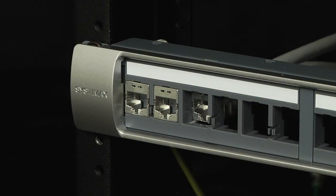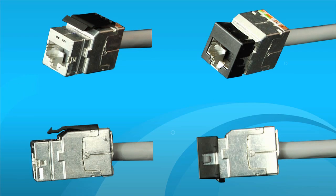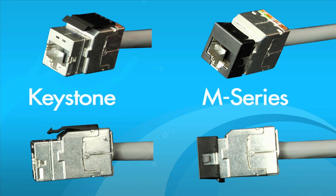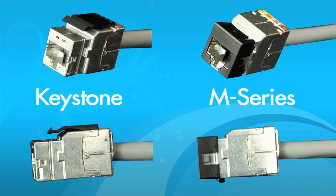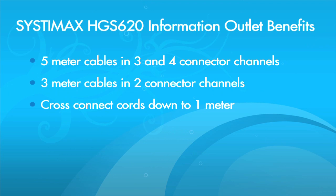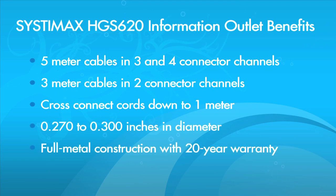Designed to mount in CommScope high density apparatus, the HGS620 outlet is compatible with industry compliant Keystone and M-Series panels, faceplates and boxes. The rugged outlet helps reduce channel length requirements and accommodates various sized cables.